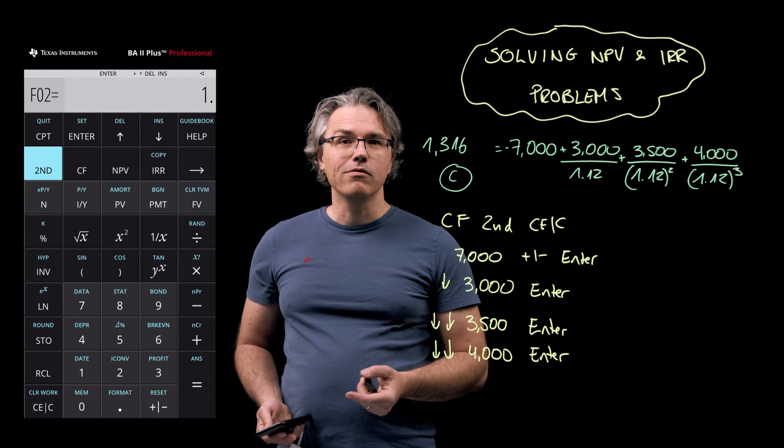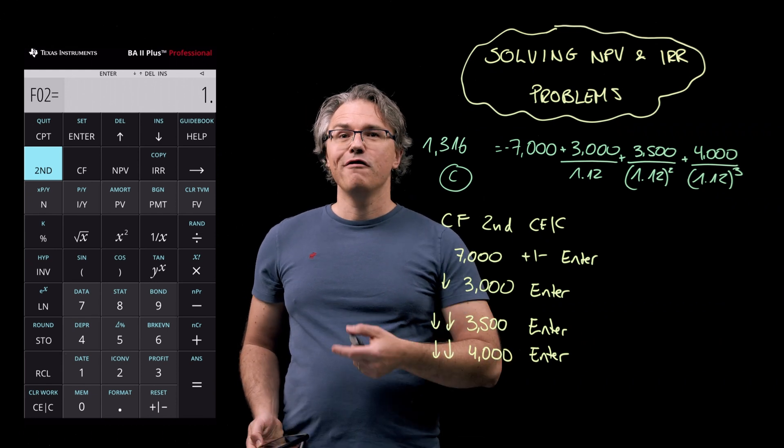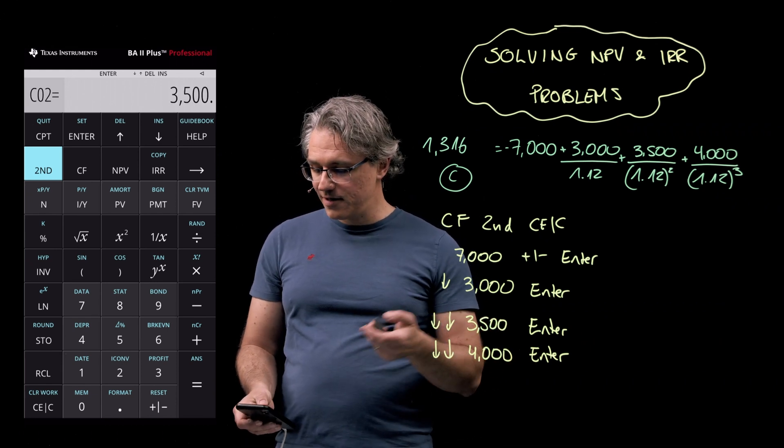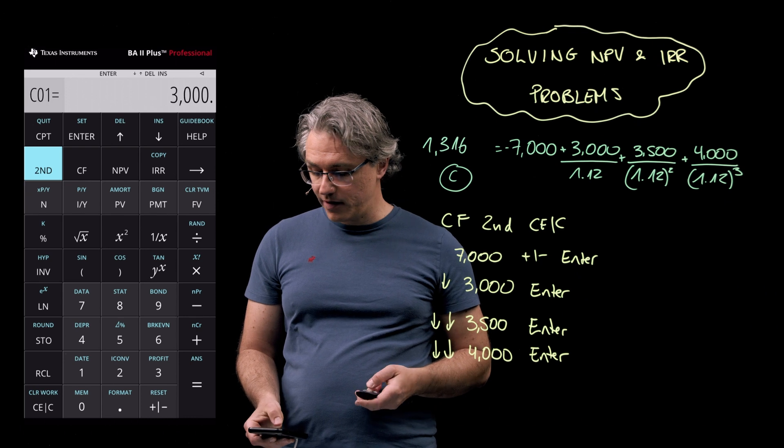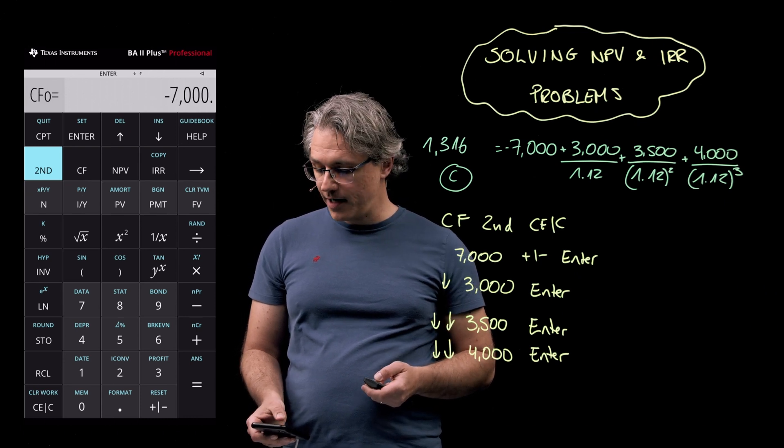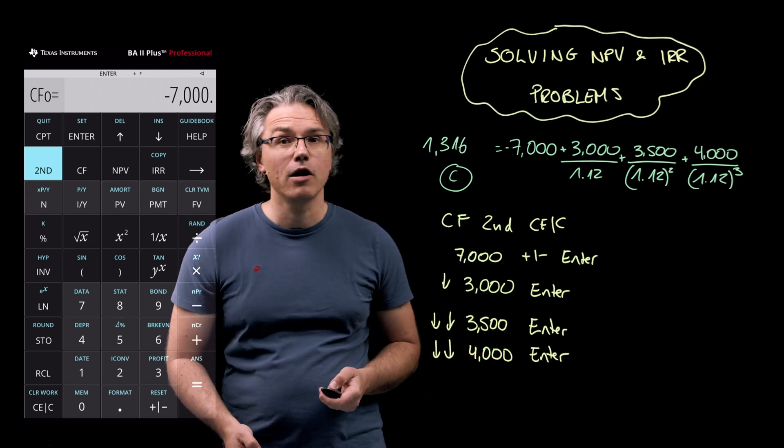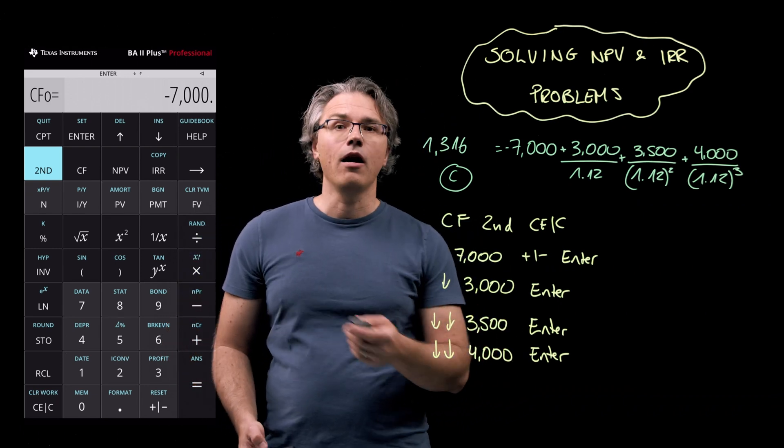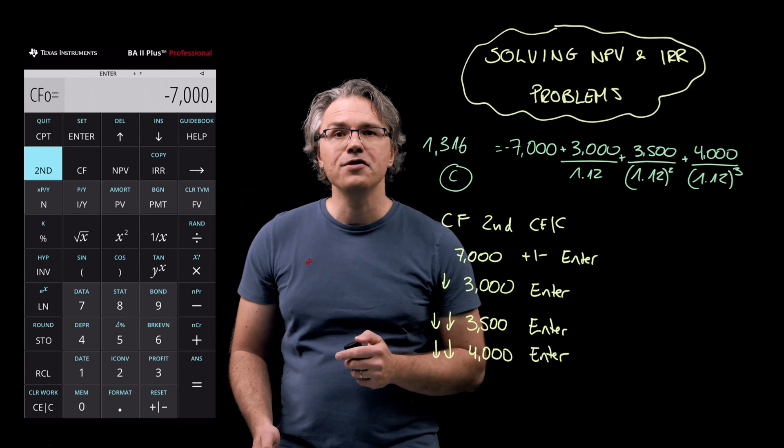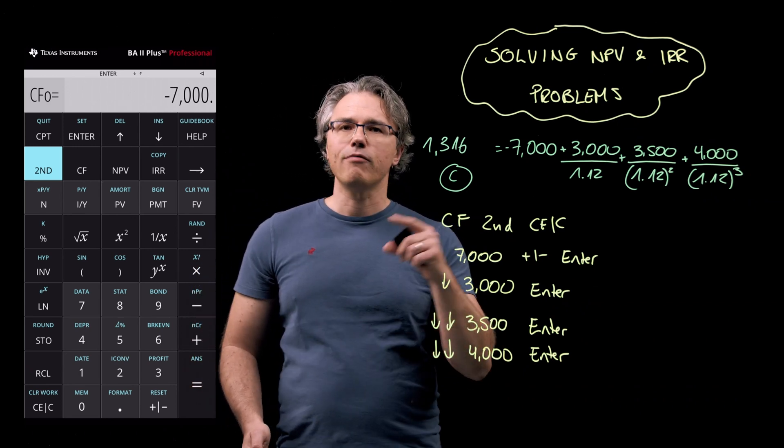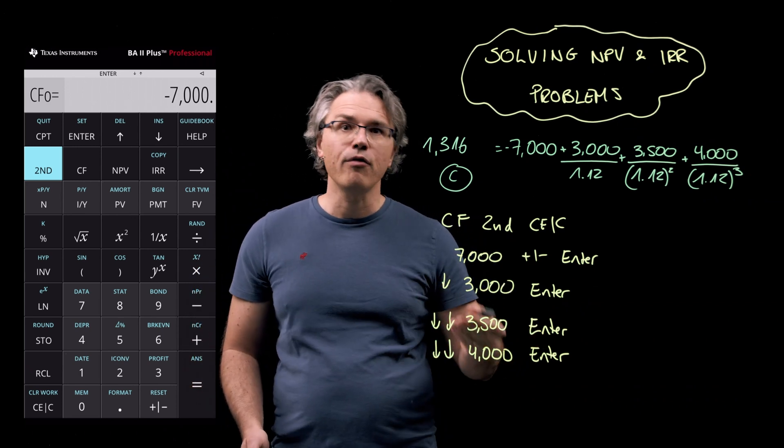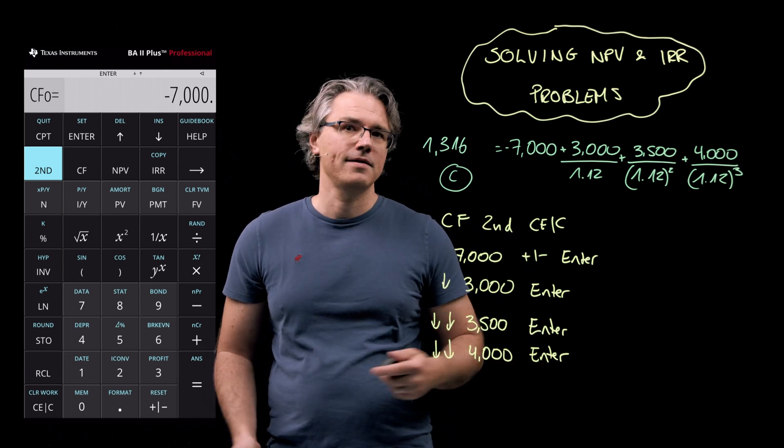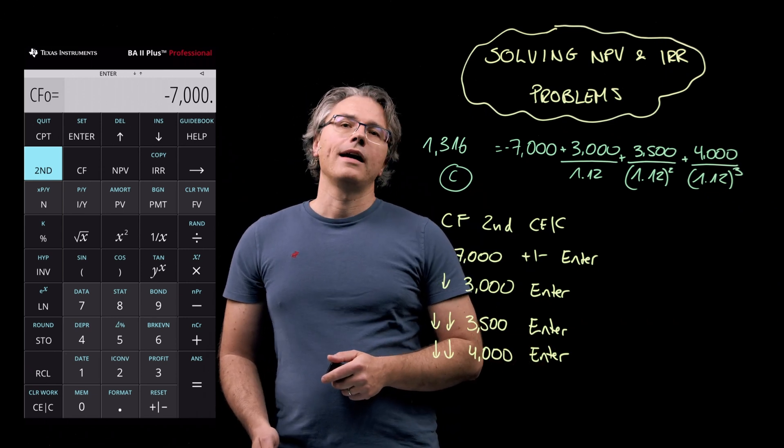Now the nice thing about the cash flow worksheet is that you can use the up and down arrows to scroll up and down through your inputs. You can obviously use this functionality to check that they are correct. If you want to change any of them, just go to the relevant place and overwrite the previous entry and hit enter. It's as simple as that.